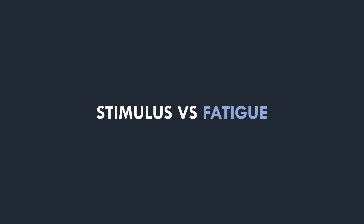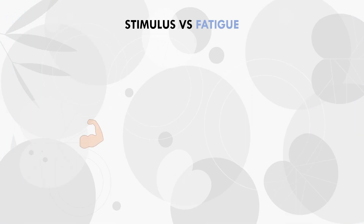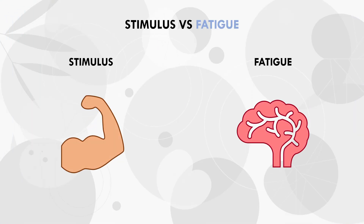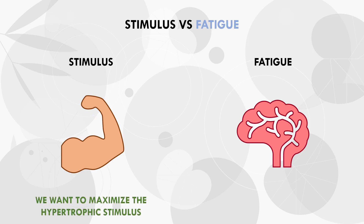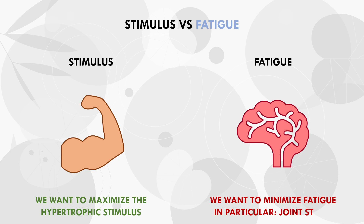When discussing technique for hypertrophy training, there are two primary considerations: the hypertrophic stimulus and the fatigue induced. Basically, we want to maximize the stimulus to achieve the best muscle growth outcomes. However, we also want to minimize fatigue, which refers to a combination of psychological, physiological and physical fatigue. Most notably, joint and connective tissue stress is the primary concern on the fatigue side of the equation for hypertrophy training.